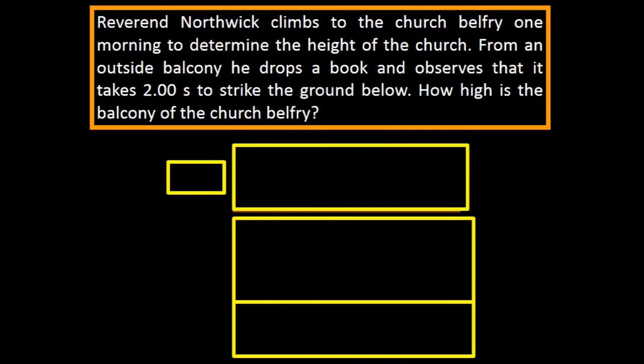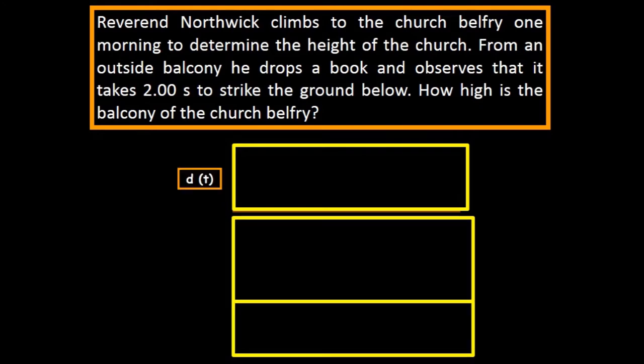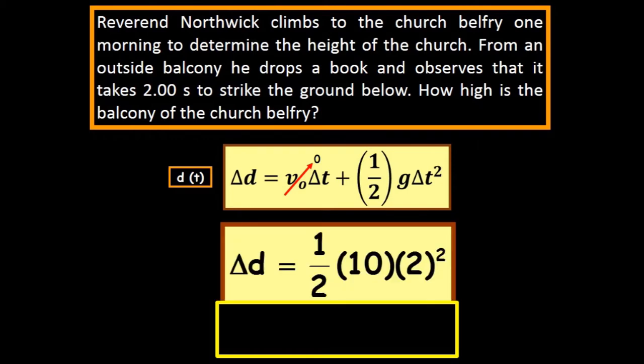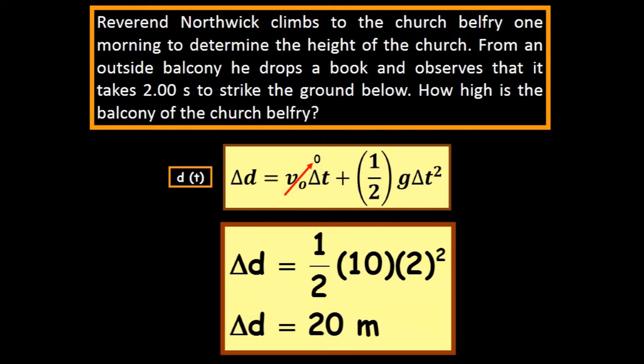Reverend Northwick climbs to the church belfry one morning to determine the height of the church. From an outside balcony, he drops a book and observes that it takes two seconds to strike the ground below. How high is the balcony of the church belfry? How high something is, how long does it take to hit the ground? D of T, obviously. D naught is zero because it's starting from rest. So one-half times 10 times 2 squared is 20. That'll be 20 meters.